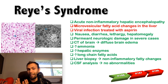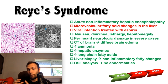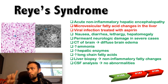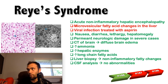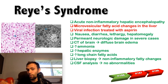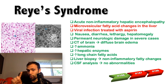When you inhibit beta-oxidation and oxidative phosphorylation, you end up with fatty acid accumulation. On histology, we call this microvesicular fatty changes in the liver — note microvesicular, which is different from macrovesicular. This is particularly high yield for Reye syndrome, and it happens when a viral infection is treated with aspirin in a child. That's why we don't use aspirin to treat infections in children — however, Kawasaki disease is the exception to this rule.